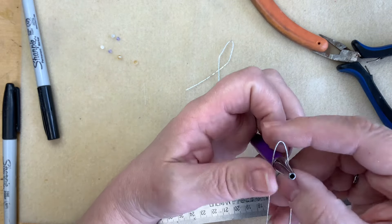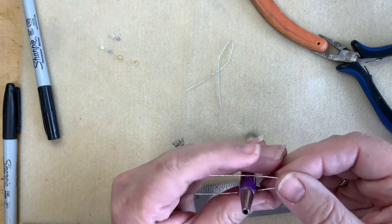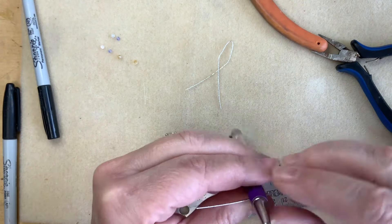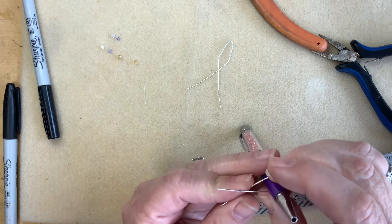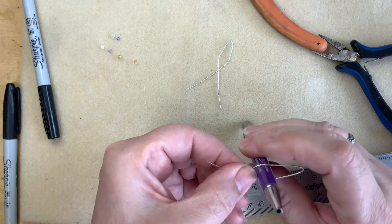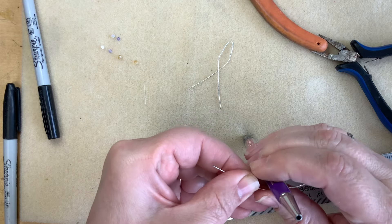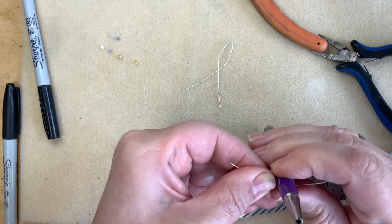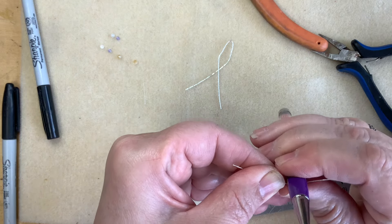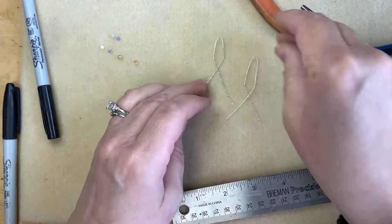All right, so slide this other one down. Measure, make sure I'm about a half inch from the end. And I am. And then I'm going to cross these wires over each other, making sure they're the same length. And just kind of press and form.